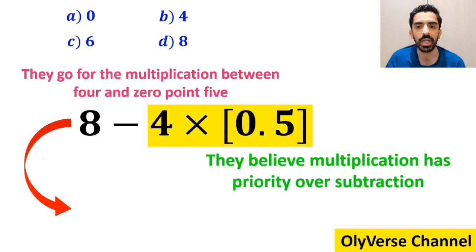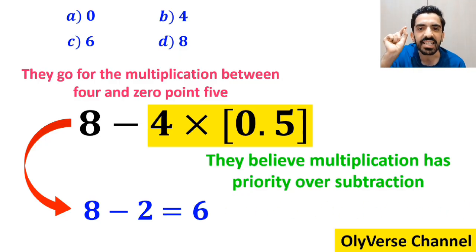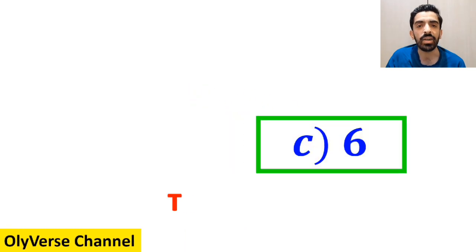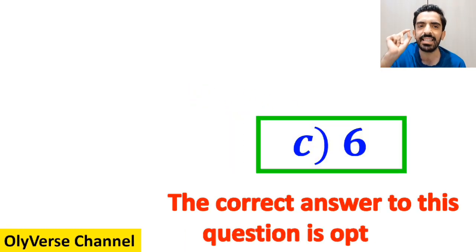So, instead of this expression, they write 8 minus 2, which finally gives them the answer 6. And immediately, they say that the correct answer to this question is option C.